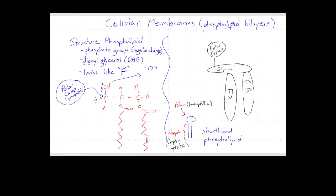Drawing all those carbons and oxygens is a lot of work, so I brought it down to just an oval to represent glycerol and a couple of ovals for fatty acids — that's a shorthand for the phospholipid. We can shorten it further: a circle with two legs coming off of it is another way to draw a phospholipid, where the circle on top includes the glycerol plus the polar head group, and the tails are nonpolar. So now we've got a molecule that's polar at one end and nonpolar at the other — that's called amphipathic — and amphipathic molecules tend to organize when they're in a polar solution like water.